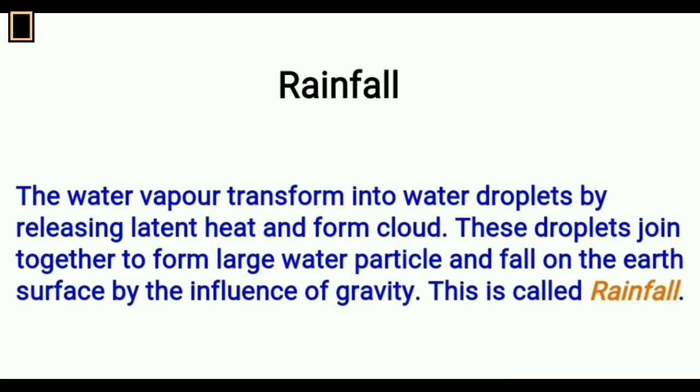Rainfall: The water vapor transforms into water droplets by releasing latent heat and form cloud. These droplets join together to form large water particles and fall on the earth's surface by the influence of gravity. This is called rainfall.